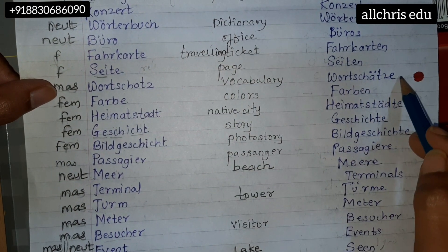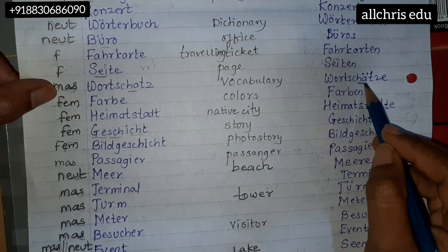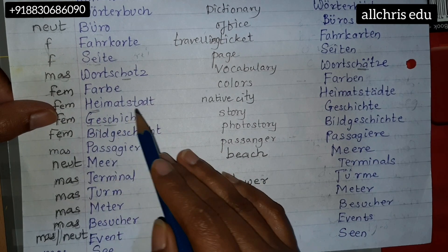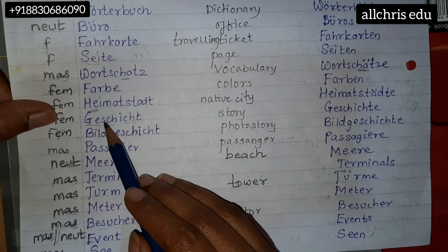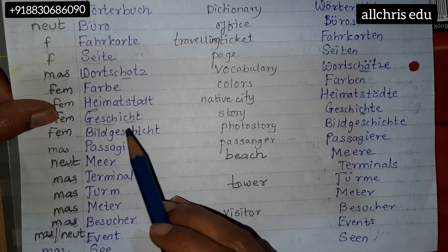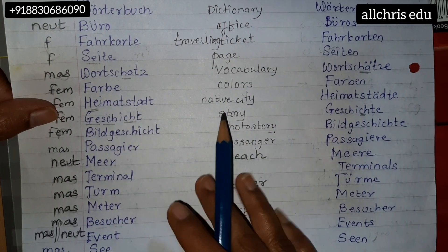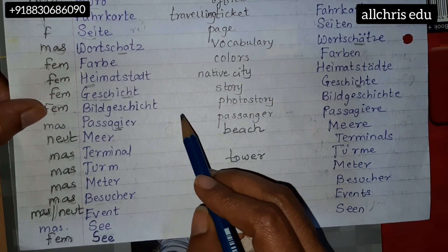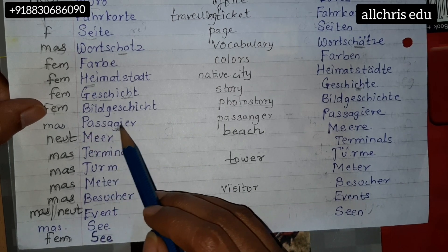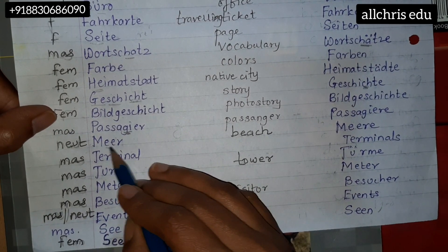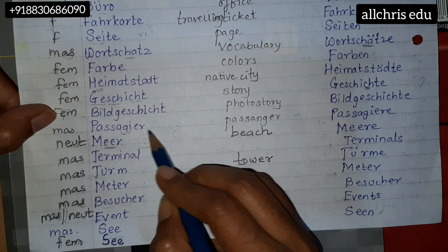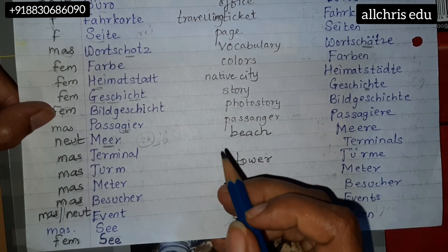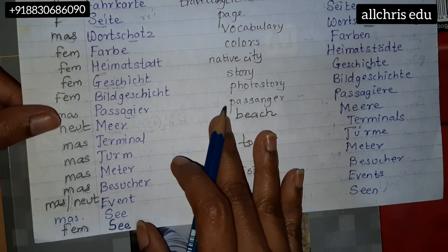Werkstatt, Werkstätten. Geschichte, Geschichten. Passagier — your 'J' sound should come; though it is written with G, we make the sound of J, J for jug. Passagier, Passagiere. Meer — when double E comes, as we have already written on our last page, it has the sound of 'ä' like a goat. Terminal, Terminals.